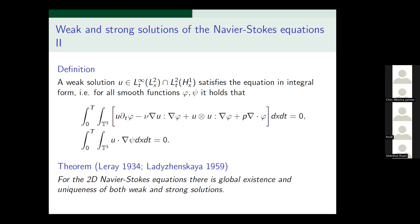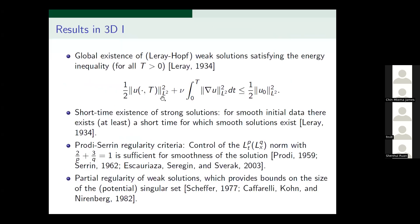The 2D Navier-Stokes equations are quite well understood: it was proved by Leray and Ladyzhenskaya long ago that you have global existence and uniqueness of weak and strong solutions. In 3D the picture is different. Leray proved global existence of Leray-Hopf solutions for L^2 data satisfying the energy inequality. It is open whether they satisfy energy equality. This property of existence transfers to fractional Navier-Stokes: for any exponent s bigger than zero, you have global Leray-Hopf solutions.